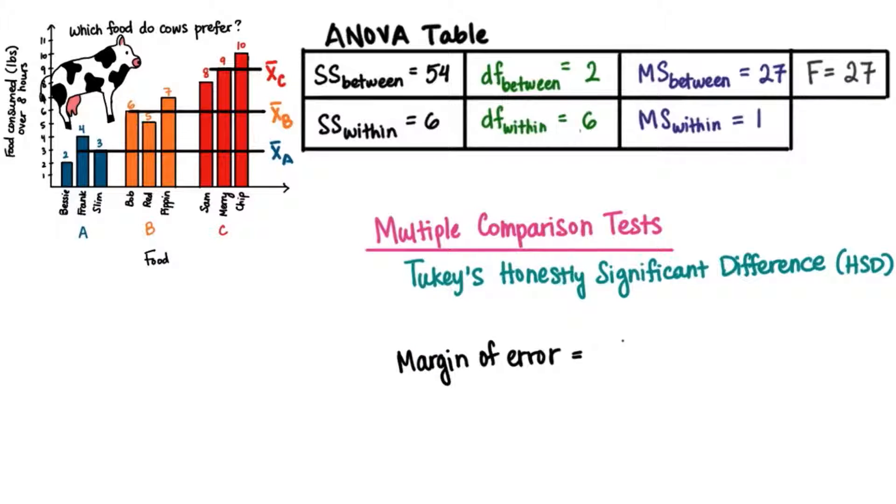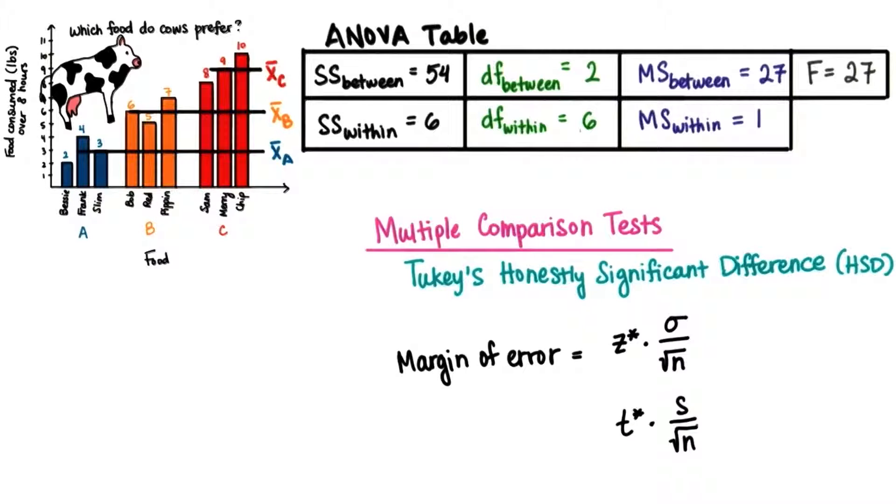Remember that with the Z test, it was the Z critical value, denoted Z star, times the standard error. And with the T test, it was the T critical value times the standard error. Recall that this is approximately equal to half the width of the confidence interval.